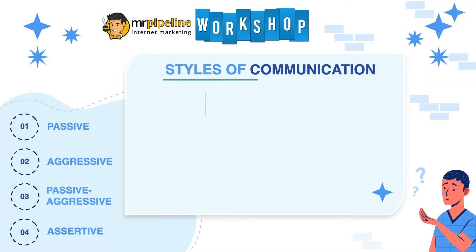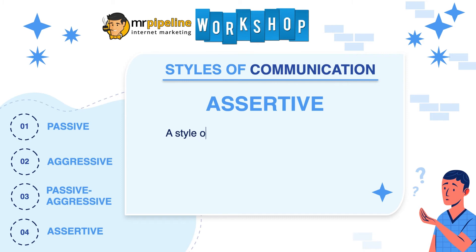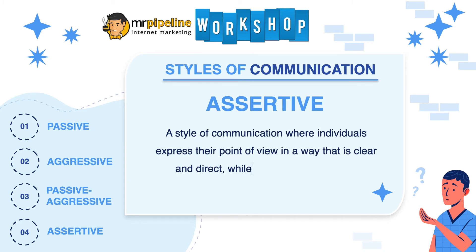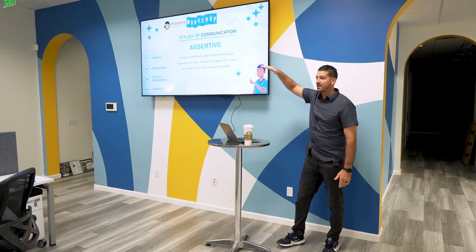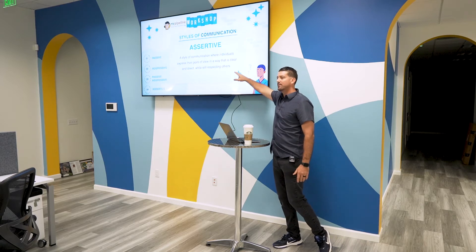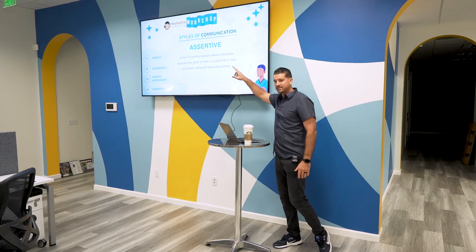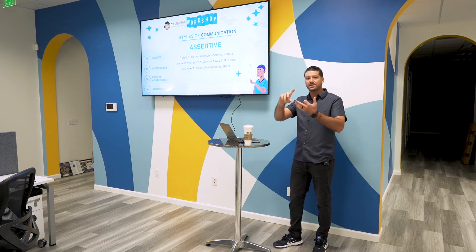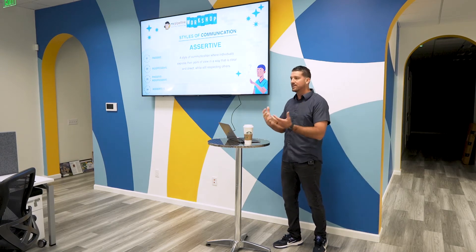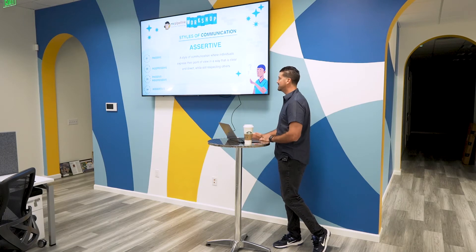The fourth style of communication is assertive. Assertive is defined as a style of communication where individuals express their point of view in a way that is clear and direct while still respecting others. Out of the four different styles we've gone over, this is the one you want to practice the most. This is going to help you have good communication, good relationships, and a better overall feeling on both sides of the conversation.